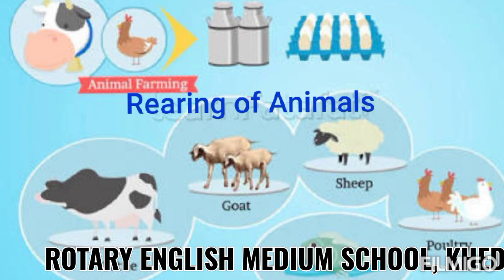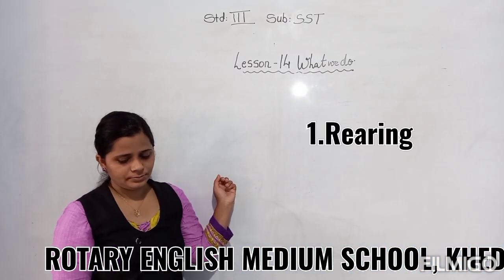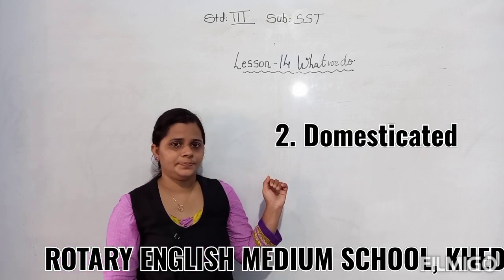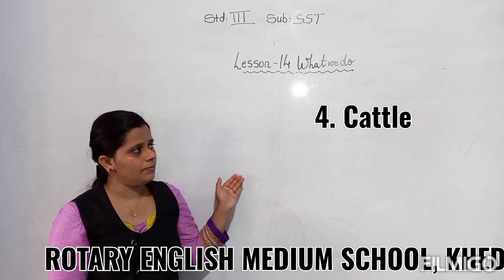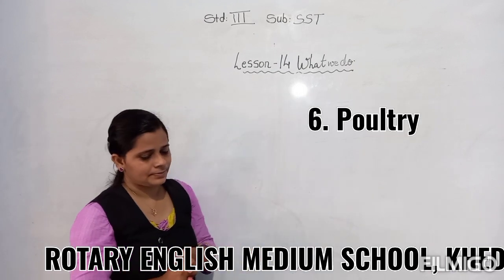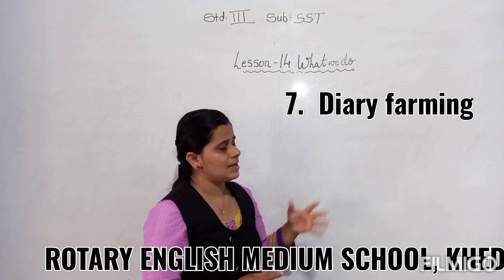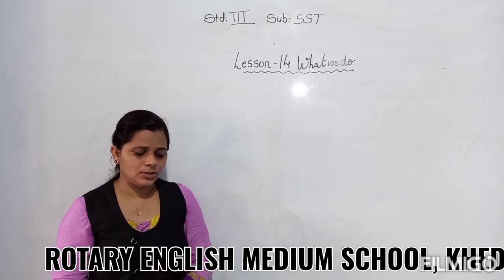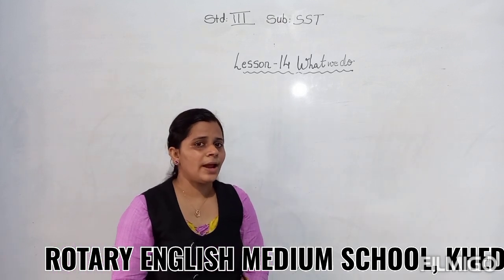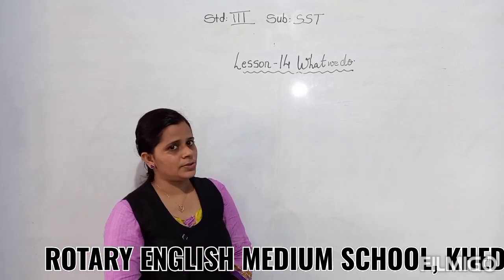Today we talked about the rearing of animals. I hope you have understood. Now take down your new words: rearing, domesticated, breeding, cattle, ploughing, poultry, dairy farming, cod liver oil, and pisciculture. Write these new words in your notebook and read the textbook. Thank you.